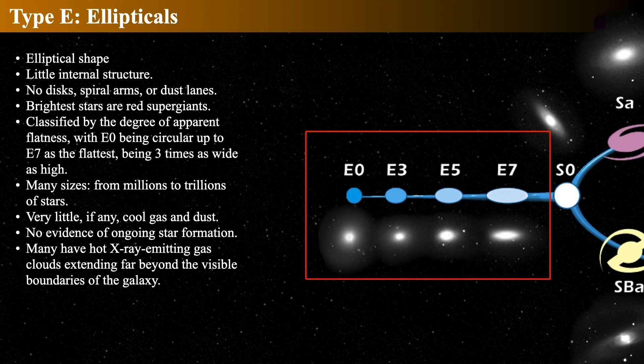When a science is young, as it was in Hubble's time, your first steps are usually the same: make a bunch of observations and try to group things together that are similar. In biology, the taxonomy of plants and animals leads us to judge first their appearances. We start our journey of classification with the elliptical galaxies, which are elliptical in appearance. They don't have any internal structure, disks, spiral arms, or dust lanes. What they do have is a lot of old yellow and red stars, with the brightest being big red supergiants.